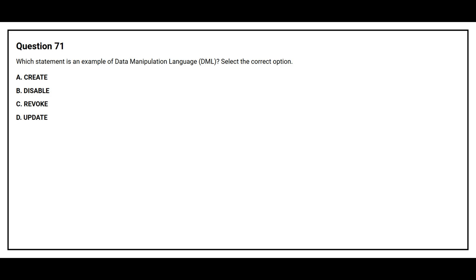Question number 71. Which statement is an example of data manipulation language (DML)? Select the correct option. Option A: Create. Option B: Disable. Option C: Revoke. Option D: Update.